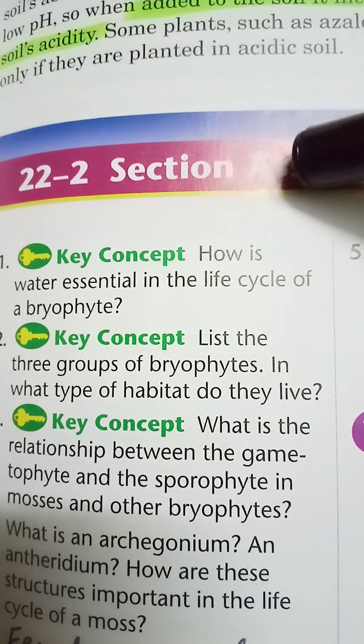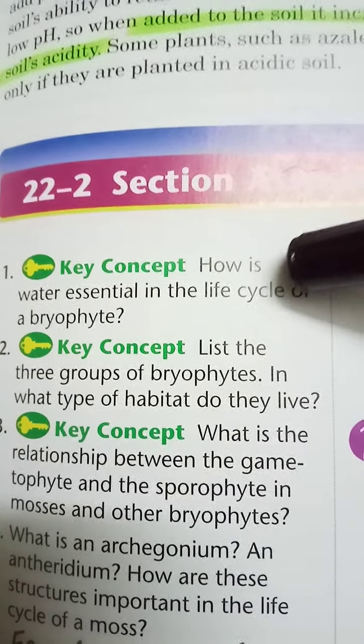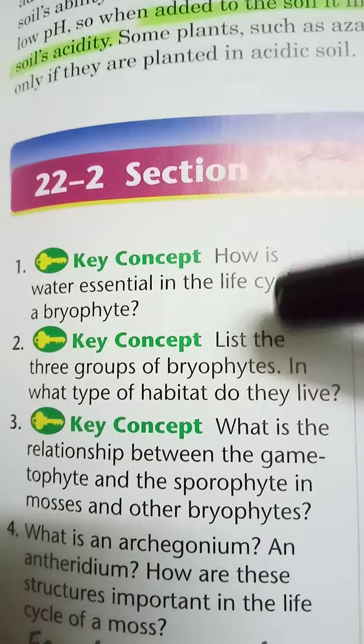Now let's talk about the most commonly asked questions about bryophytes. First: how is water essential in the life cycle of bryophytes? Water is required to complete the life cycle — without water, reproduction cannot occur. Second: list three groups of bryophytes — Bryopsida, Anthocerotopsida, and Hepaticopsida. Third: what is the relationship between the gametophyte and sporophyte in mosses and other bryophytes? The gametophytic phase is dominant and the sporophytic phase is dependent on the gametophyte for food and water.